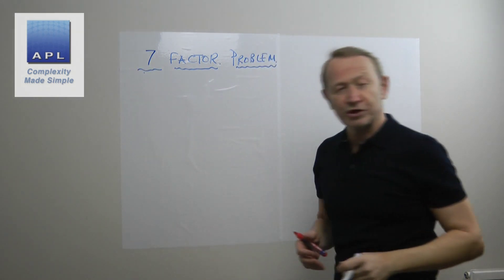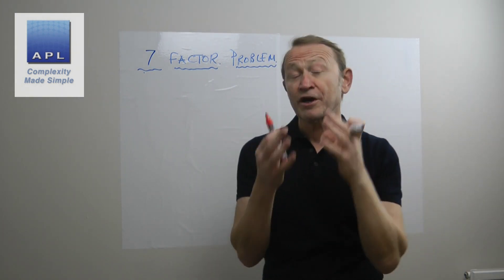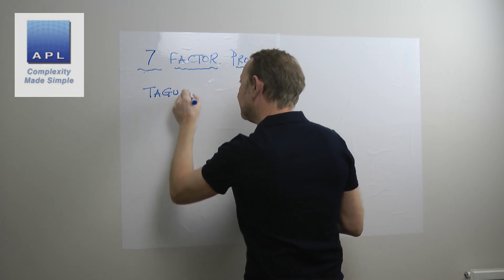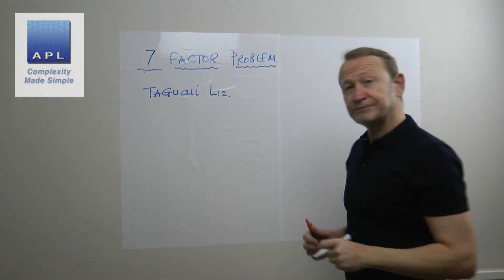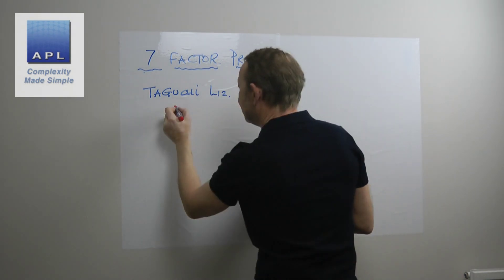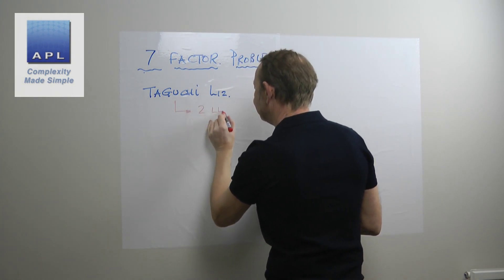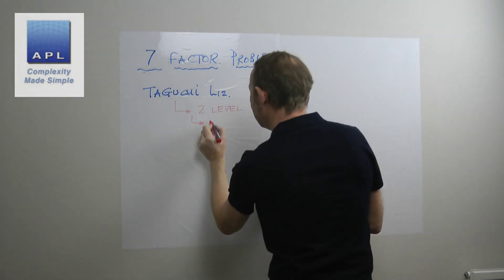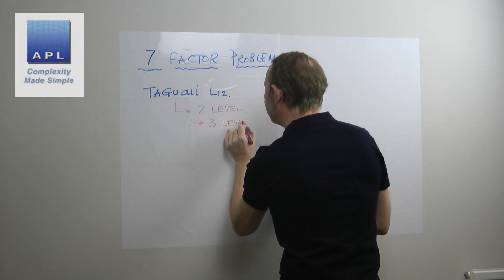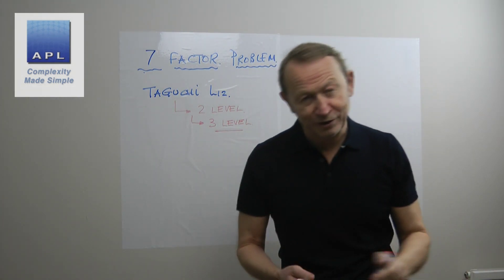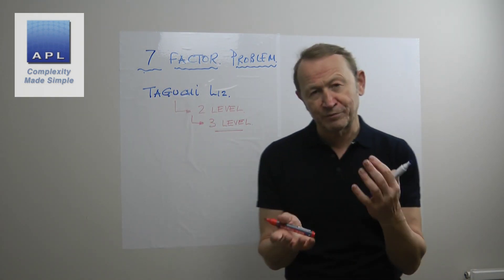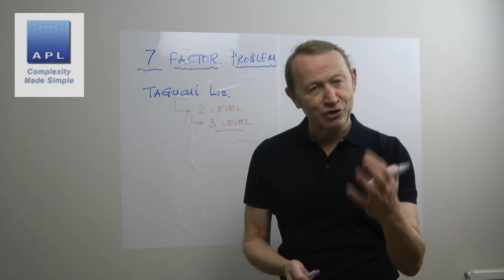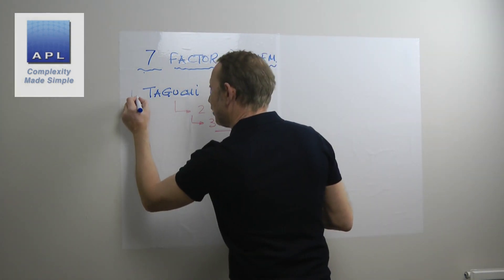What experiment would I recommend? My first recommendation was the Taguchi L12. But the question came back: yes, but that's two-level, and I think my system responds in a curved manner, which of course would require us to add a third level to our DOE. So the Taguchi L12 would be my first port of call — that would be option one — if you really think it's a two-level situation.